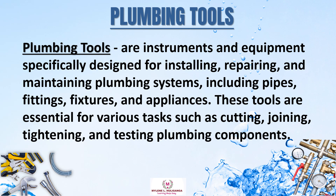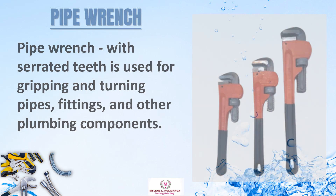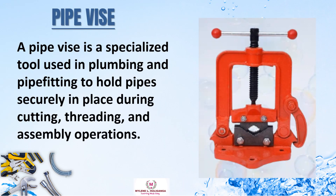These tools are essential for various tasks such as cutting, joining, tightening, and testing plumbing components. A pipe wrench with serrated teeth is used for gripping and turning pipes, fittings, and other plumbing components. A pipe vise is a specialized tool used in plumbing and pipe fitting to hold pipes securely in place during cutting, threading, and assembly operations.